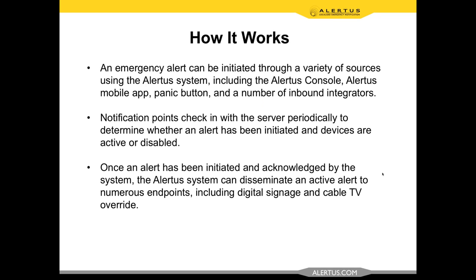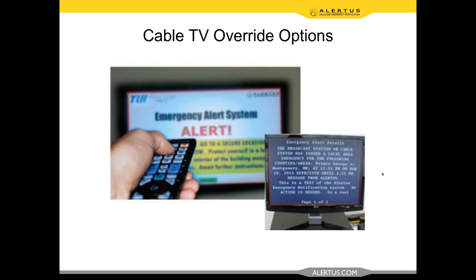An emergency alert can be initiated through a variety of sources — your Alertus console, the mobile app, or a panic button. You can select whether digital signage is used based on the notification you're sending. Notification points check in with the server periodically to determine whether an alert has been initiated and devices are active. This is a key point — the Alertus system is fully monitored and supervised, which is a code requirement. If a device goes offline, we report that immediately so you can address it. We also report when digital signage and cable TV is activated, how long it's active, and when it ends.